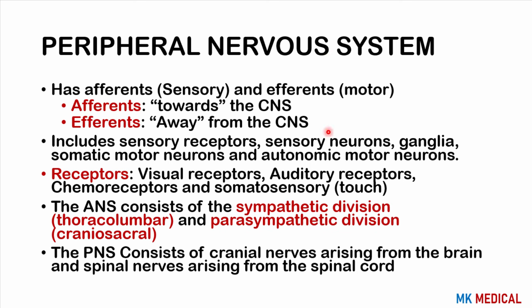You have ganglia, which are a collection of cell bodies in the peripheral nervous system. A collection of cell bodies in the CNS is a nucleus (plural: nuclei), while in the PNS it is a ganglion (plural: ganglia). You also have somatic motor neurons, which carry out voluntary functions, and autonomic motor neurons, which carry out automatic functions. The autonomic nervous system is divided into the sympathetic (thoracolumbar) and parasympathetic (craniosacral) divisions.